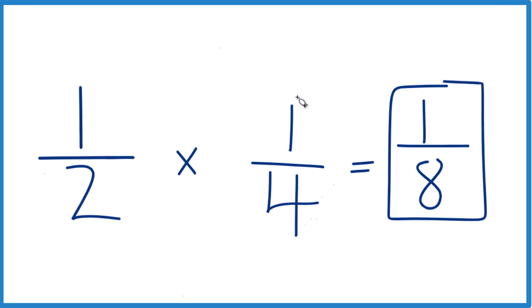So when we take 1 half divided by 4, we get 1 eighth. Or when we take 1 half times 1 fourth, that reciprocal of 4, we get 1 eighth as well.